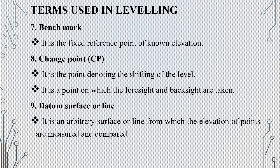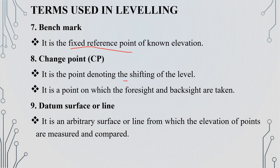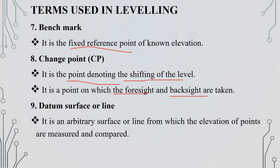The next term is benchmark. It is a fixed reference point of known elevation. The next term is change point. Change point is the point denoting the shifting of the level. It is a point on which both the foresight and the backsight are taken. The next term is datum surface or line — an arbitrary surface or line from which the elevation of points are measured and compared.